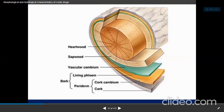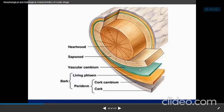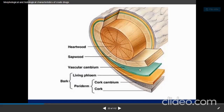Looking at the bark structure under the microscope, you can see: cork, cork cambium, periderm, living phloem — all of which form the bark up to the vascular cambium. The cambium, shown in green, is the dividing part between the bark and the wood. Beyond the cambium is soft wood and hard wood, giving the complete stem cross-section structure.